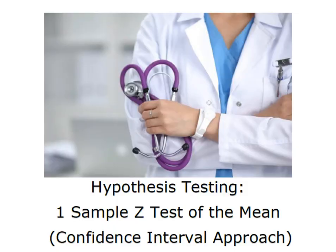Hey everybody, it's Professor Williams. We're going to conduct a one-sample Z test of the mean. We're going to use the confidence interval approach to come to our decision.